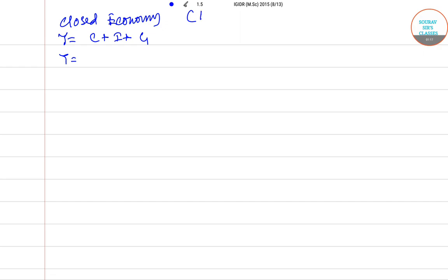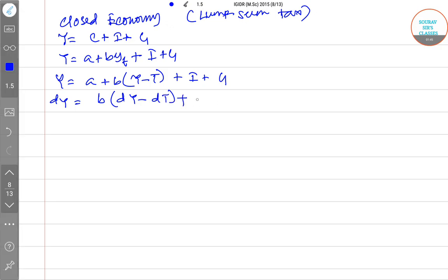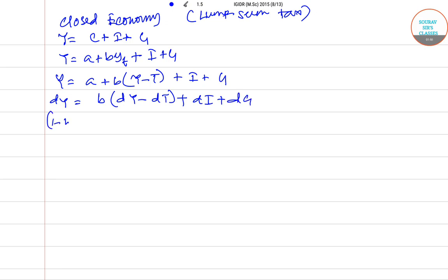So we have Y equals to C plus I plus G. So I am first dealing with the case of lump sum tax. A plus B times disposable income, Y minus T, plus I plus G. So Y equals A plus B(Y minus T) plus I plus G. Taking total differentiation on both sides.